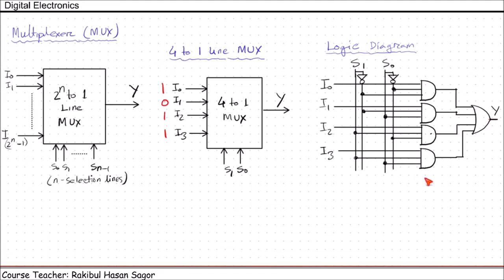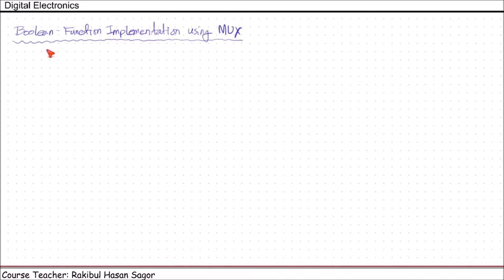Multiplexers are often used as digital switches, and sometimes they are also called data selectors. Next, we will see the implementation of a Boolean function using MUX. In our previous lectures, we saw the implementation of any function using a decoder with an external OR gate. Here, we will see how we can implement any Boolean function using MUX.